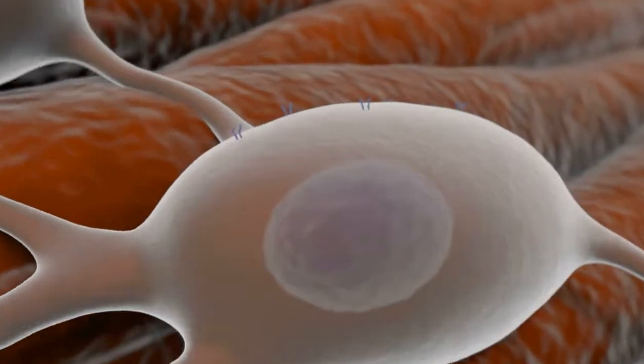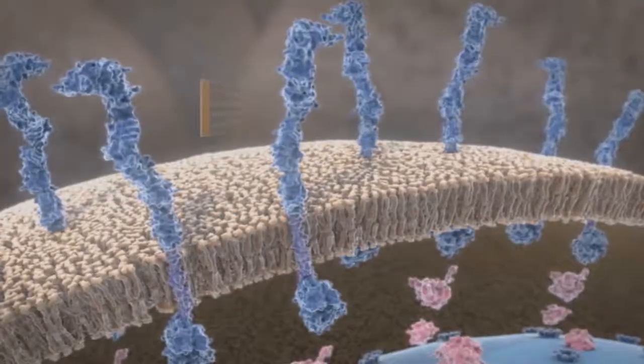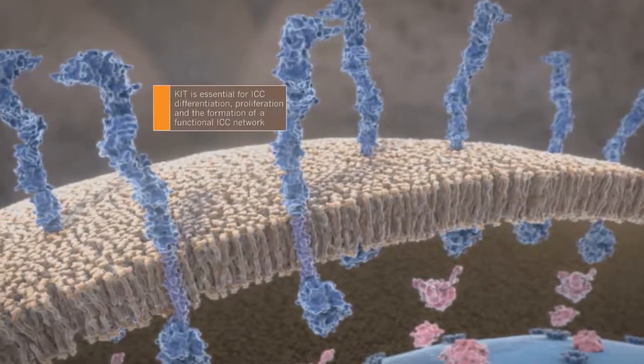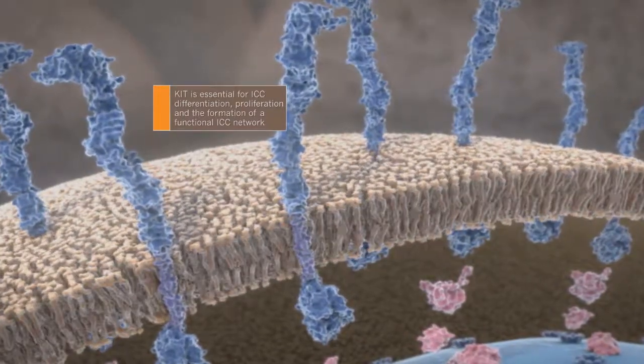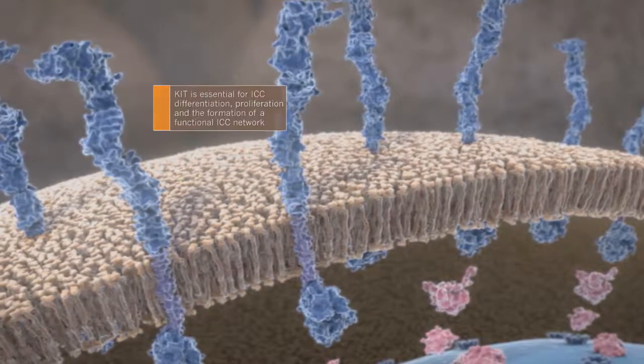Embedded in the ICC cell membrane is KIT, a receptor tyrosine kinase, essential for ICC differentiation, proliferation, and the formation of a functional ICC network.